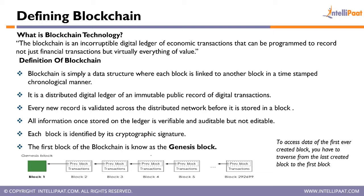Blockchain is a data structure where each block is linked to another block in a time-stamped, chronological manner. Each block contains data, and multiple blocks are chained together — hence the term 'blockchain.' Each block has a timestamp indicating when it was created. In the diagram, block three came after block two, which came after block one. The first block is called the genesis block — it has no parent — while all subsequent blocks reference their predecessor.